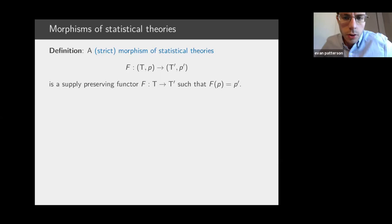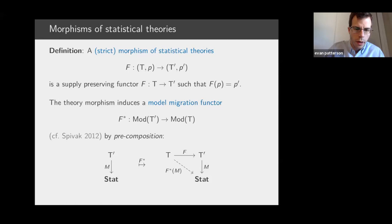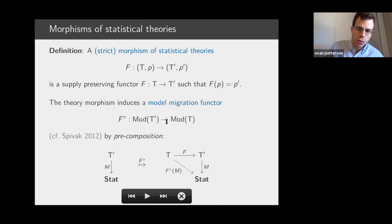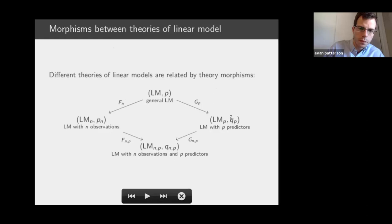This brings us to morphisms of statistical theories. If theories are a certain kind of category together with a distinguished morphism, then the most natural notion of a morphism of theories is a supply-preserving functor between the categories, with the requirement that the sampling morphisms be strictly preserved. By a now-familiar paradigm, these morphisms of theories induce migration functors between the categories of models of those theories: if I have a model of theory T', I can pre-compose it with a theory morphism from T to T' to get a model of T.